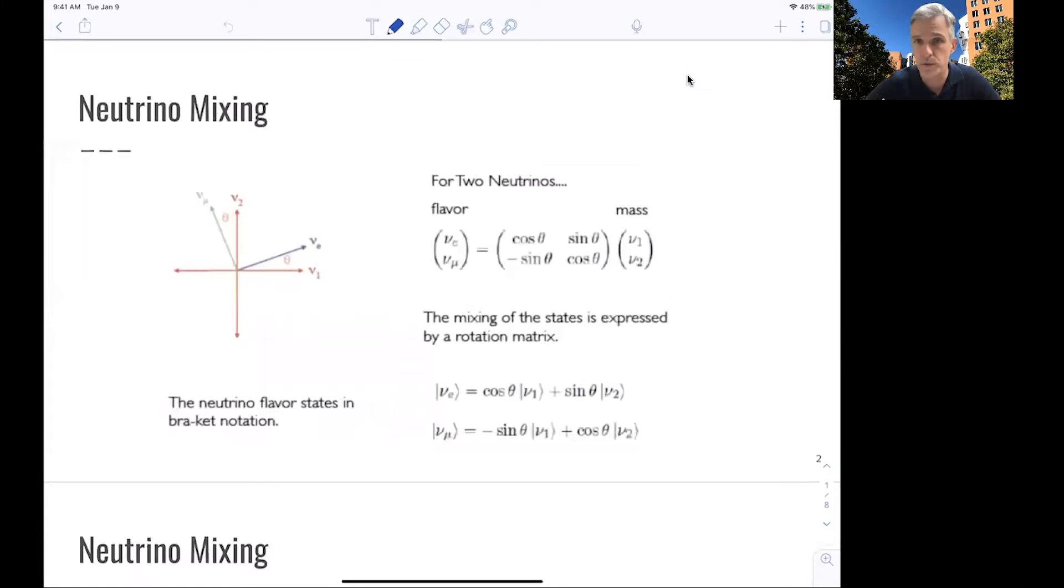Just starting from two neutrino generations, we can write the flavor eigenstate via a mixing of mass eigenstate. If we do this with a simple matrix, we find that there is one angle used for the rotation of the mass eigenstate into the flavor eigenstate.